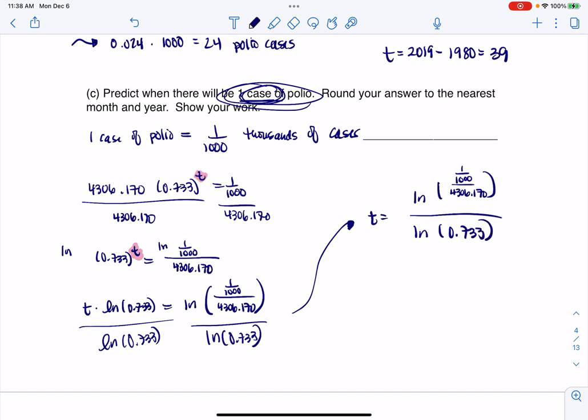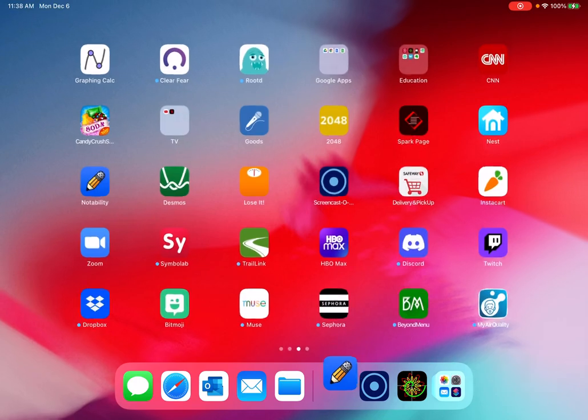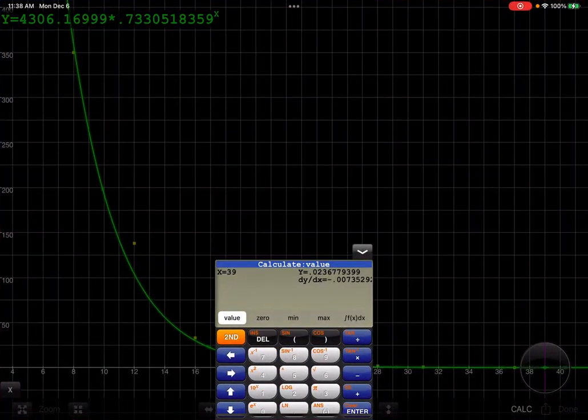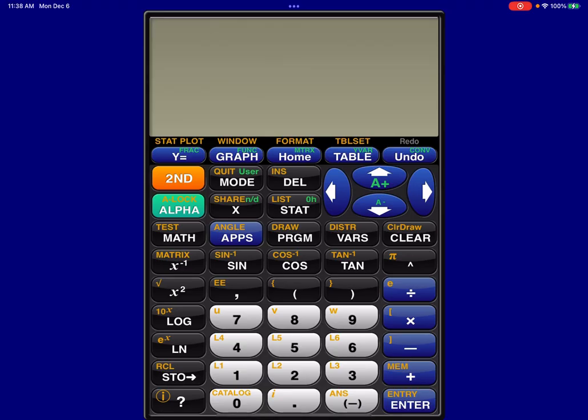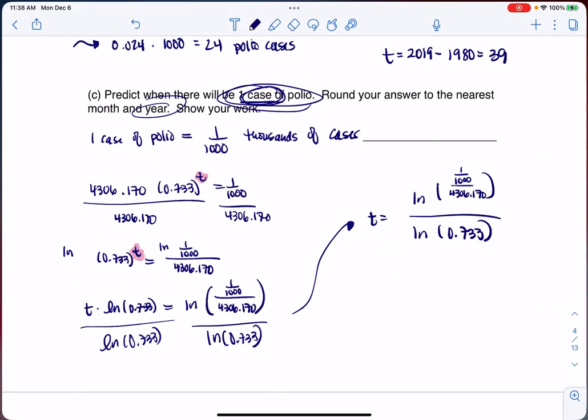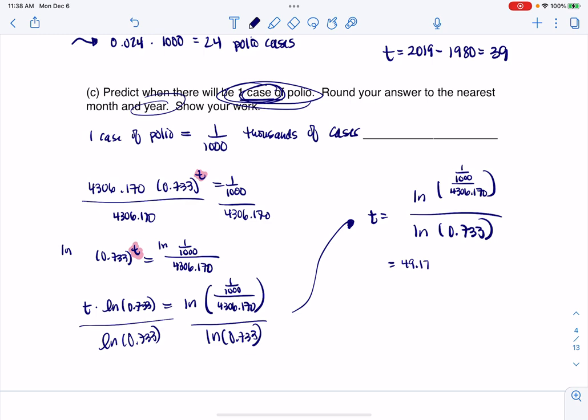Let's do it. Let's find the T value, and I'm going to round my answer. I know this says month and year. We're just going to go with year. I will correct that in post. Let's take a look. So I'm going to do the natural log of 1 out of 1,000 divided by 4306.170, and then I'm going to divide that by the natural log of 0.733. When I hit enter, I'm getting about 49.179. Let me write that down. This is going to be 49.179.